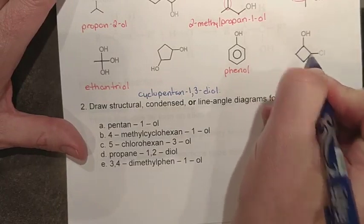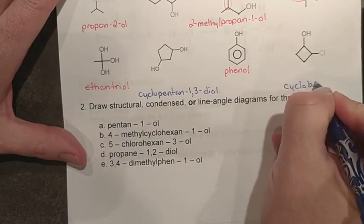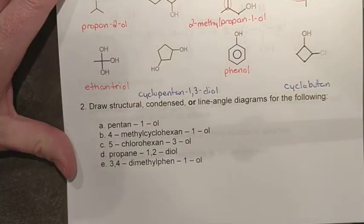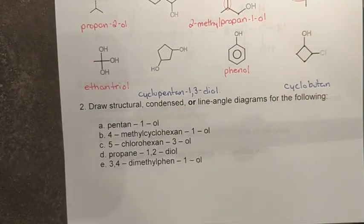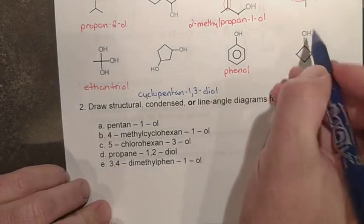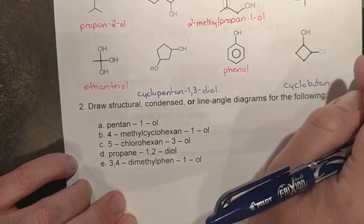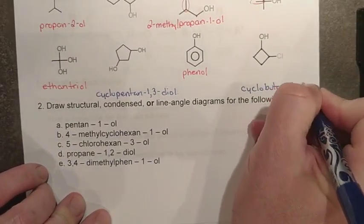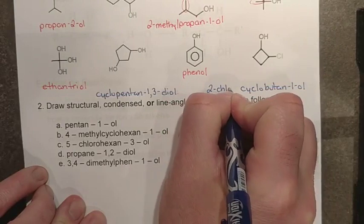One more cyclic structure - four carbons, so cyclobutane. I have two substituents and the lowest numbering works both clockwise and counterclockwise as one and two. I need to decide which gets priority. The hydroxyl group is more important than the alkyl halide, so hydroxyl gets position one, making this cyclobutan-1-ol, and numbering clockwise gives a 2-chloro substituent. So the full name is 2-chlorocyclobutan-1-ol.